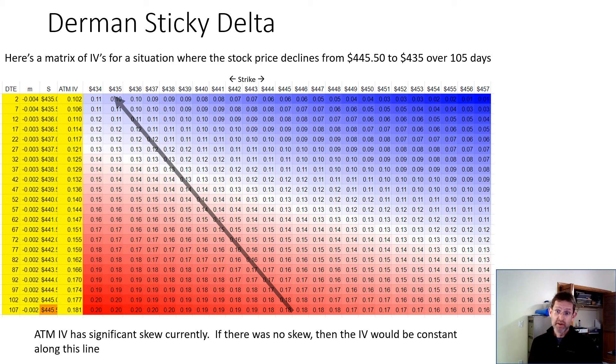How much of a big deal? Vega. Vega tells you how much of a big deal it is. Vega tells you what's the change in the option price for a 1% change in the volatility. So here, the at-the-money volatility is changing from 0.18 down to 0.1. That's a big change. So the bigger Vega is, the more sensitive the option price is going to be.